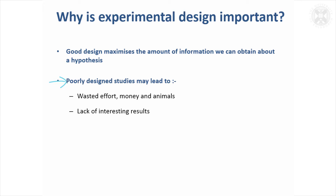We have an ethics committee at Roslyn and we're becoming more interested in whether studies are first of all using enough animals, and also that they're not using too many. You might have wasted animals if the study doesn't have enough and you don't reach the result you might have done — or you might have too many animals and get the result you wanted but didn't really need that many.